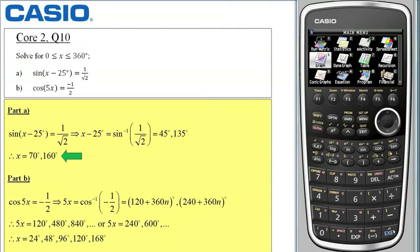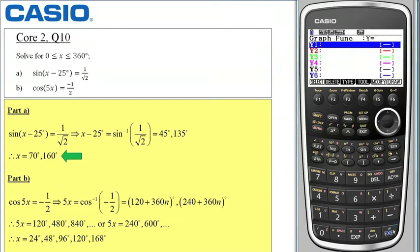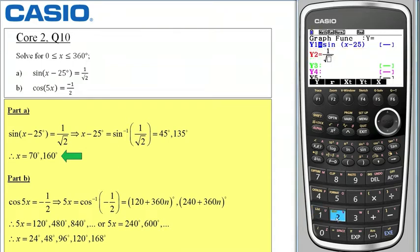I will use option 5 for the graph function menu and I am first going to key in the function sin of x take away 25. If I select execute, the second function is y equals 1 over the square root of 2. So that is 1 abc square root of 2.